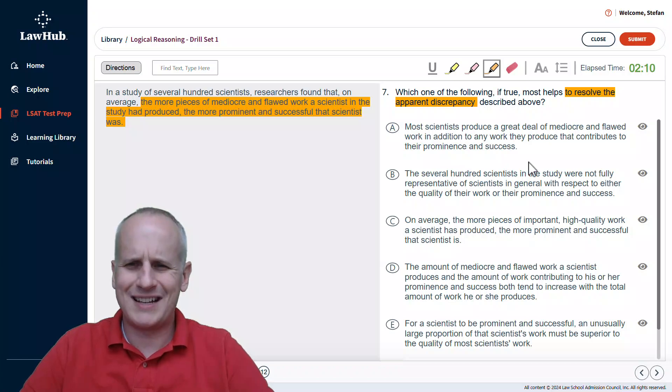Starting with choice A, most scientists produce a great deal of mediocre and flawed work in addition to any work they produce that contributes to their prominence and success. Well, we're talking about prominent and successful scientists specifically, so just categorizing it to most scientists overall doesn't explain that relationship that was described in the paragraph or the sentence, really, so we'll eliminate choice A.